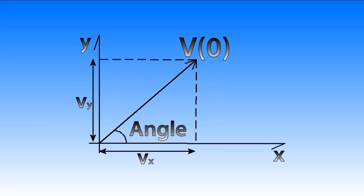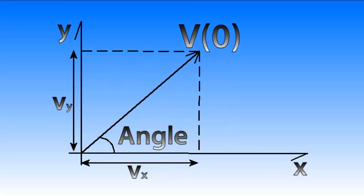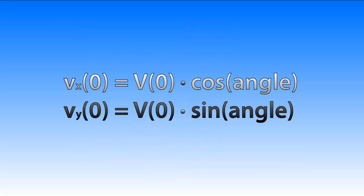First of all, we will split the velocity vector in its x and y components using vx0 is v0 times cosine of the angle and the same for vy but then using the sine of the angle.